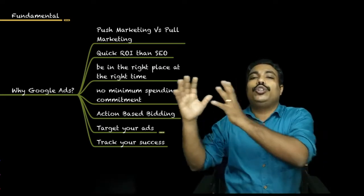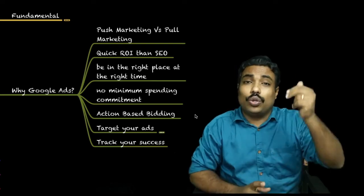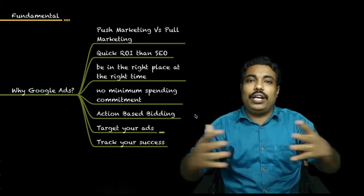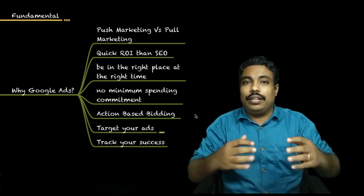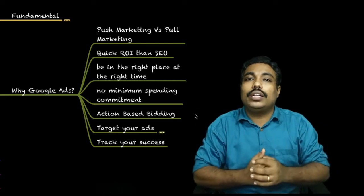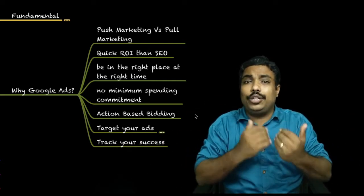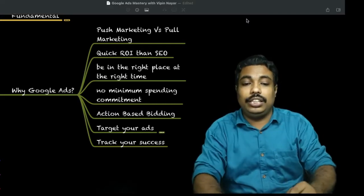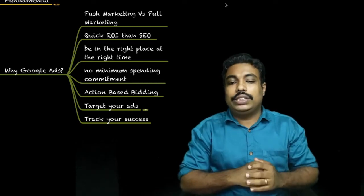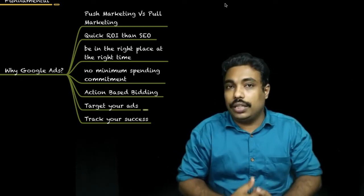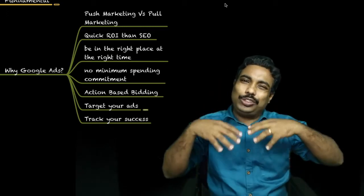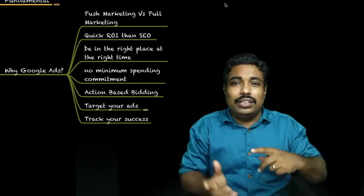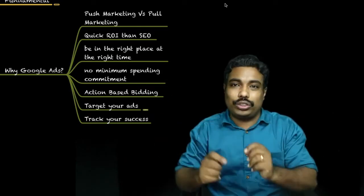YouTube ads and display ads are more focused on push marketing based on interest. Google has two major audience types: intent-based and affinity-based. Intent-based is behavior at a specific time — for example, if I am planning to buy a car, I research car-related details. That is intent behavior. Pull marketing is more effective because people are already looking to purchase, so the chances of conversion are very high compared to any other network.